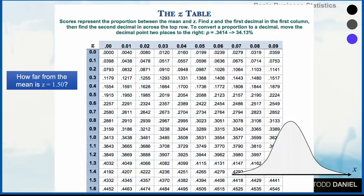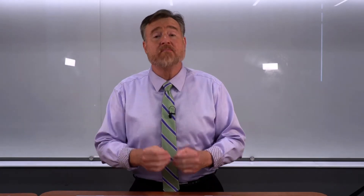A z-table shows the probabilities between the mean and any specific two-decimal z-score. You have been given a copy of a z-table as part of your course notes. If we wanted to answer a question like how far from the mean is a z of 1.50, here's how we would do it with our z-table.